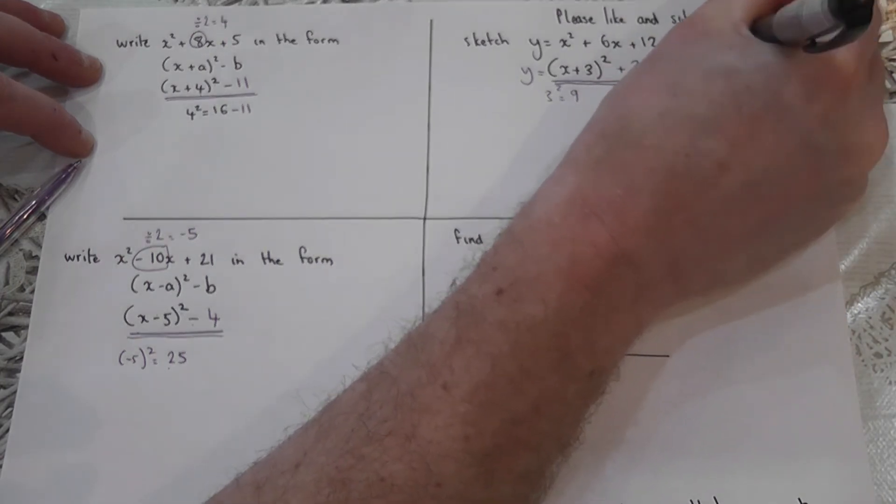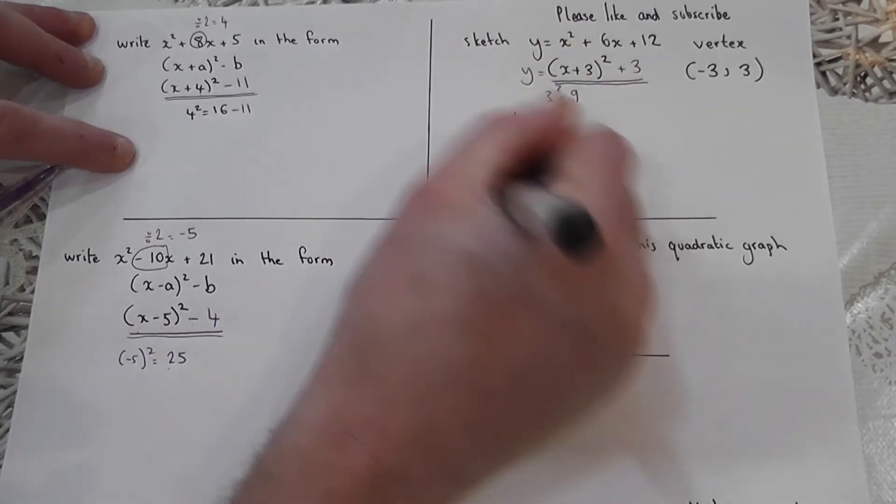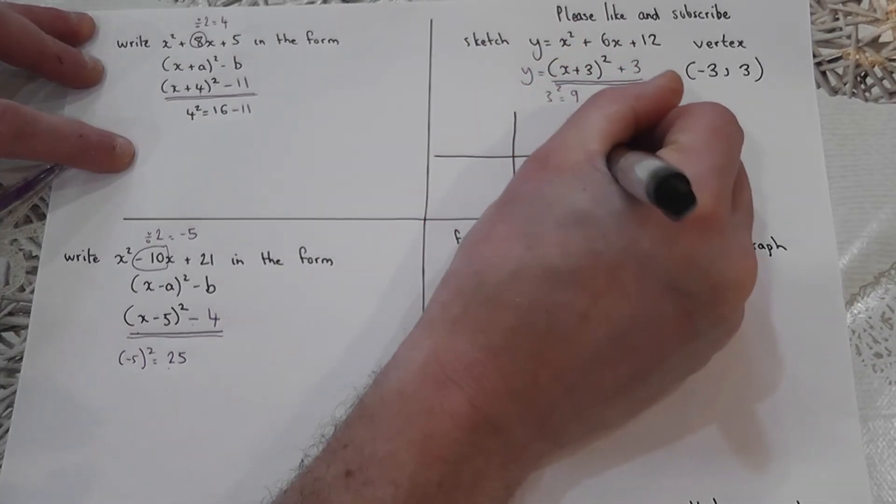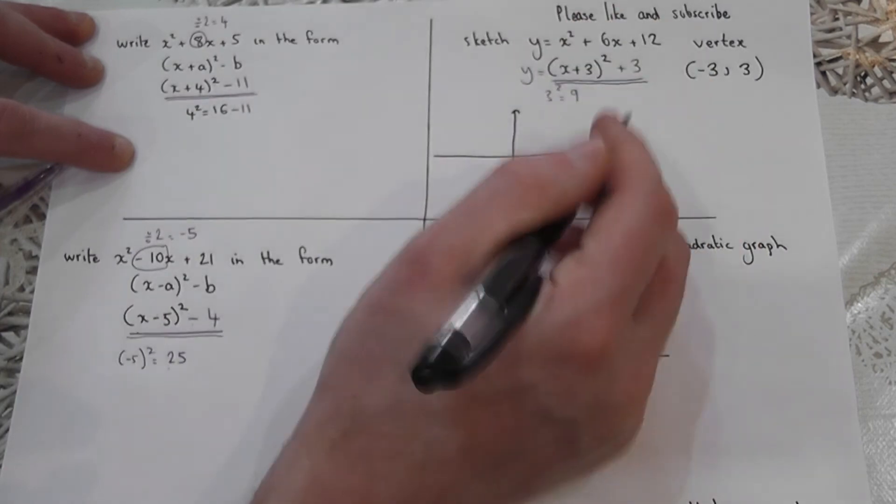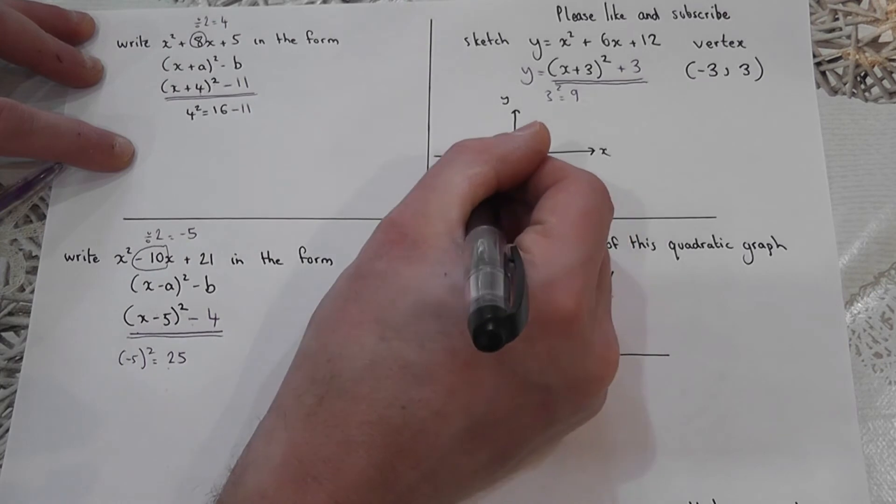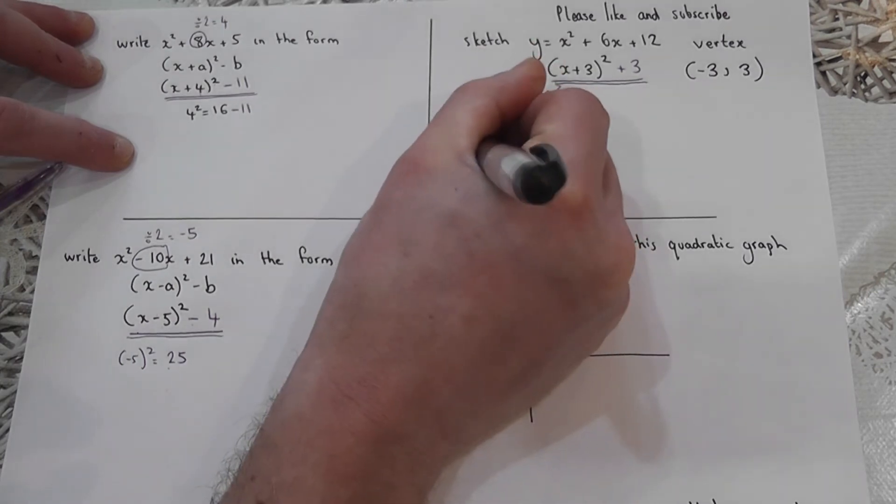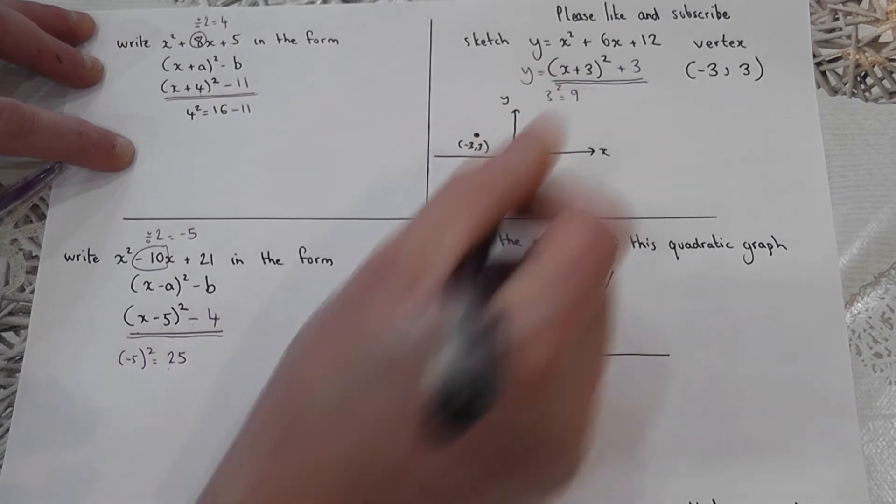And here's what that means. If I were to draw a pair of axes, x and y, then I can sketch the coordinate minus three, three. That means minus three, three. So there's the coordinate minus three, three.